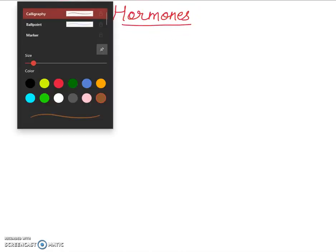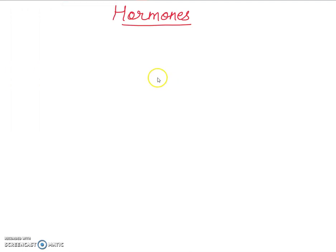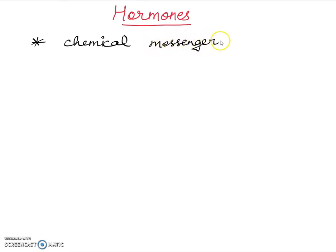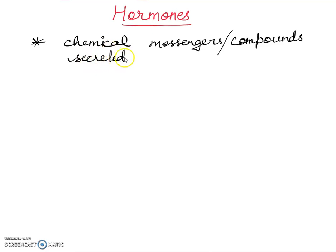So what are hormones? These are basically chemical messengers, or you can say chemical compounds. They are secreted from endocrine glands.